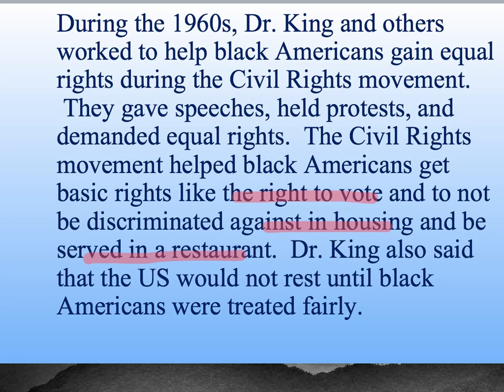Using the P acronym for this last paragraph, here it is: "During the 1960s, Dr. King and others worked to help black Americans gain equal rights during the civil rights movement. They gave speeches, they held protests, and they demanded equal rights. The civil rights movement helped black Americans get basic rights like the right to vote, and to not be discriminated against in housing, and to be served in a restaurant." Dr. King also said the U.S. would not rest until black Americans were treated fairly. That background information includes knowing that the civil rights movement helped lead to the Voting Rights Act of 1965 and laws for fair housing.